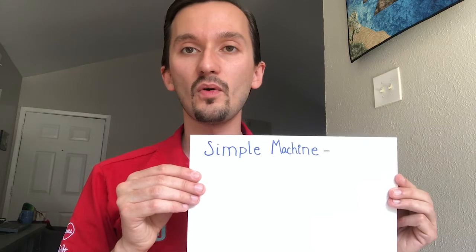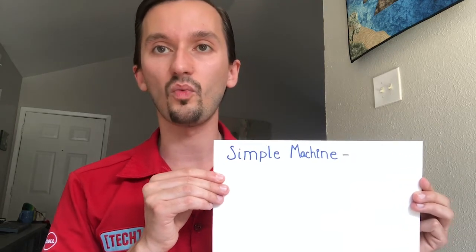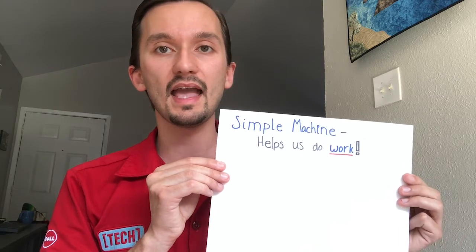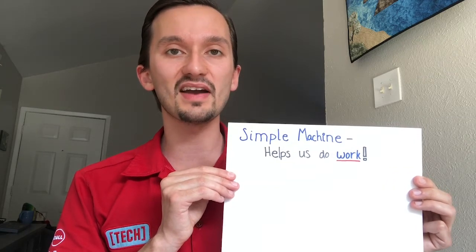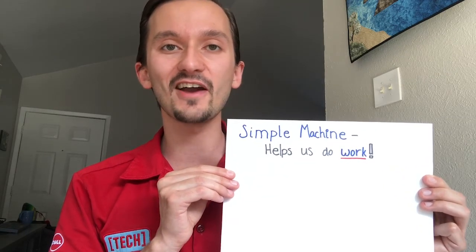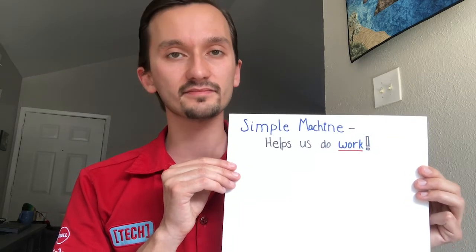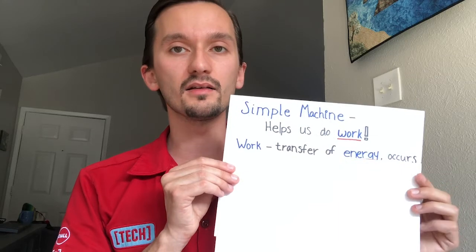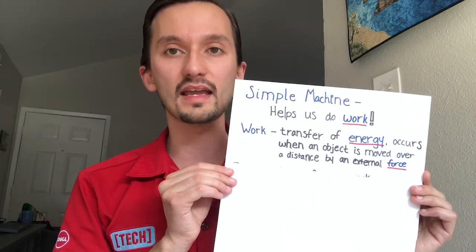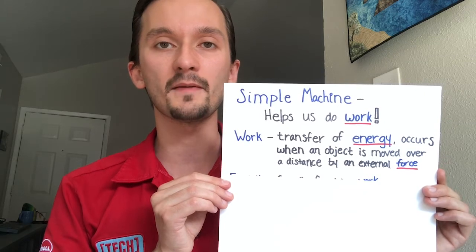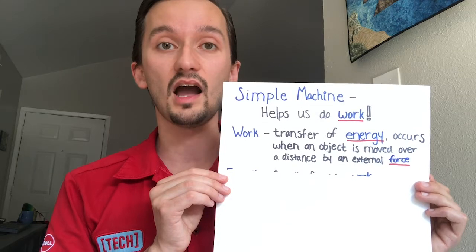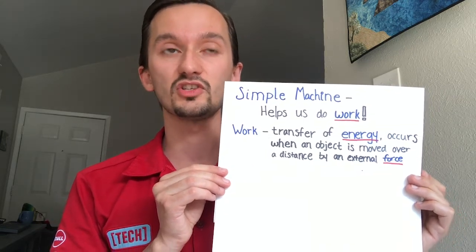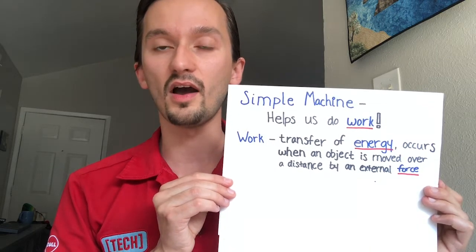Going back to our simple machine, you might wonder — what is a machine? Simply put, it helps us do work. When you think of work, you might think of homework or chores, and you're on the right track. But there is a specific answer: work is the transfer of energy, and that occurs whenever you move an object across a distance using force.